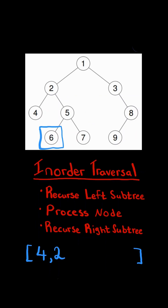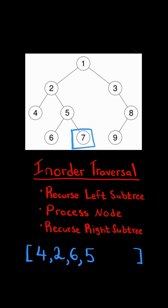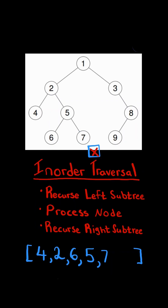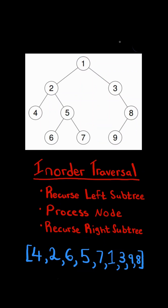We further recurse on its left subtree, and again recurse on its left subtree, but notice it's null, so we move up and process the parent node. We then recurse on its right subtree, but once again it's null, so we move up the stack and process the node. We recurse on its right subtree, and notice its left subtree is null, so we process the parent, and notice its right subtree is null, so we move up the stack and process the root node, and recurse on its right subtree. At the end, this will be the output of the in-order traversal.